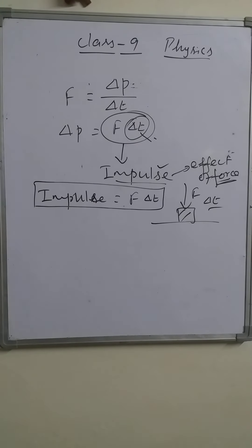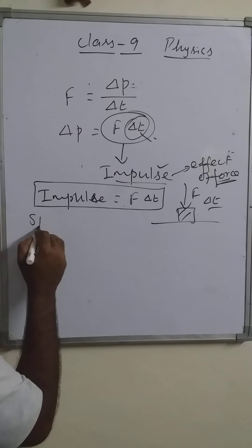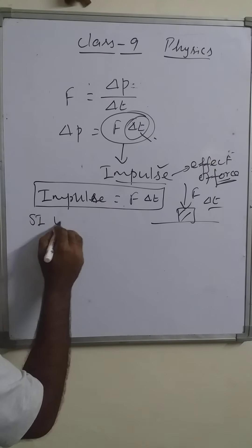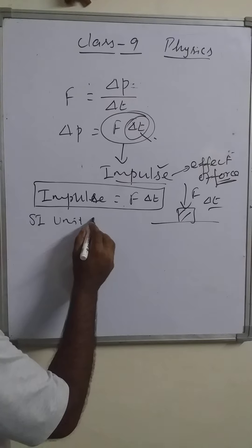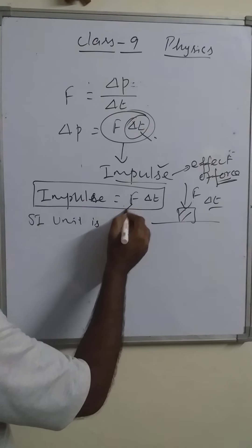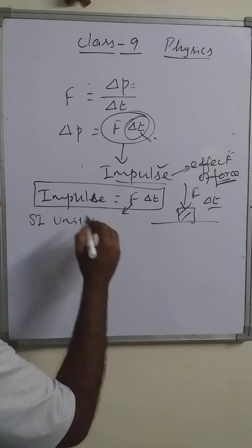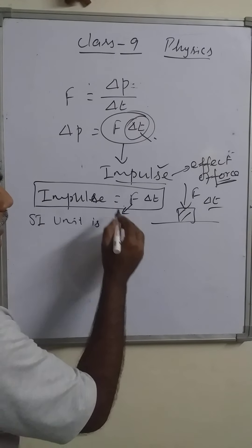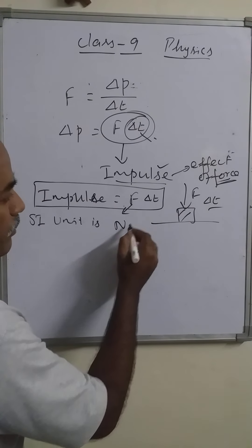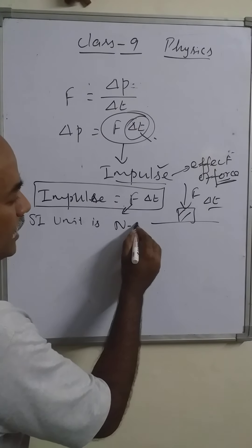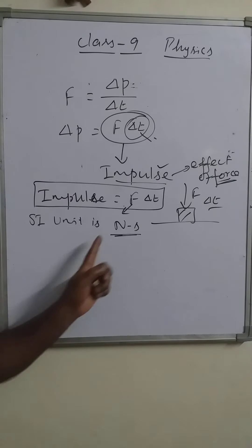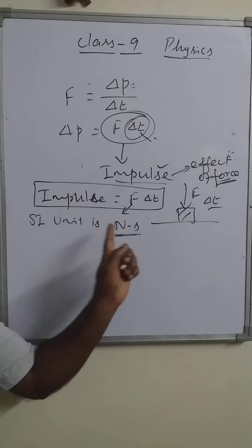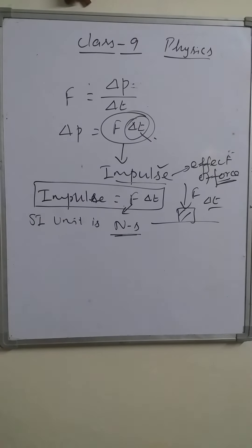From this we can obtain the SI unit of impulse. For force it is Newton and for time it is second, so Newton-second is the SI unit of impulse.